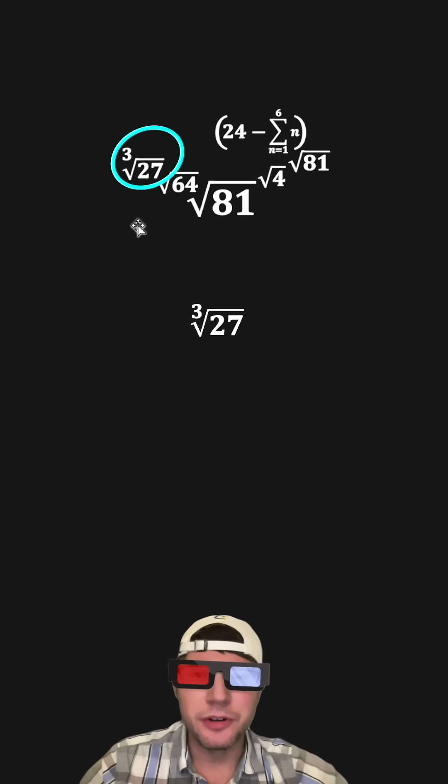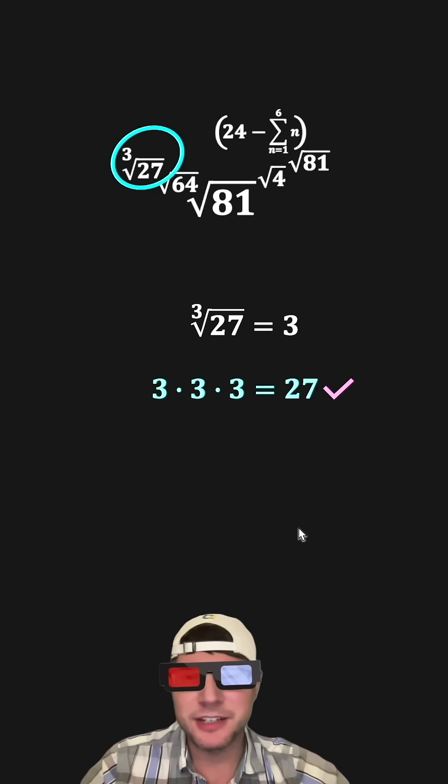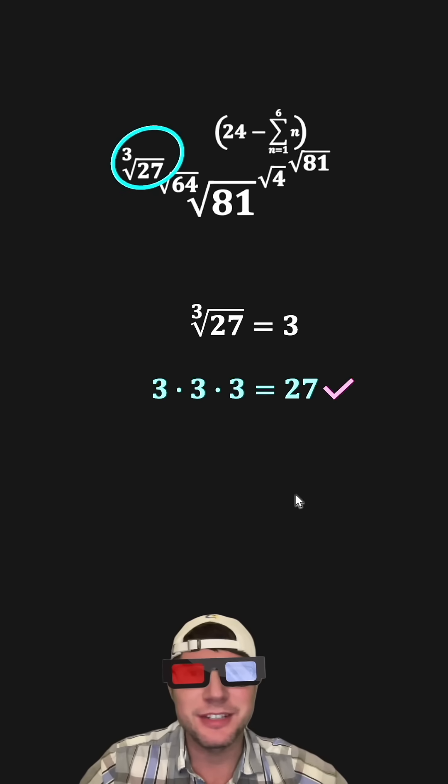Now we know that this is a cube root of 27, and cube root of 27 is equal to 3, and that's because 3 times 3 times 3 is 27. So this whole thing is going to change into 3.